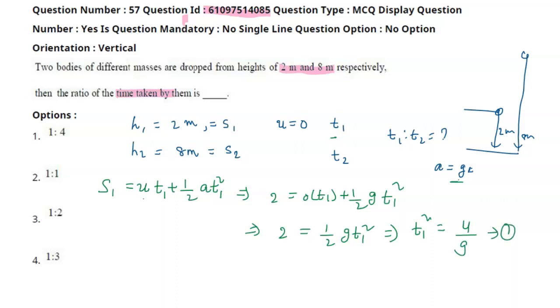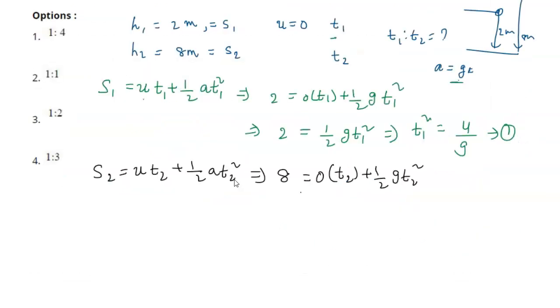For the second body, s2 equals u t2 plus half a t2 squared. Since u equals 0, we have 8 equals half g t2 squared. Therefore t2 squared equals 16 by g. This is equation 2.